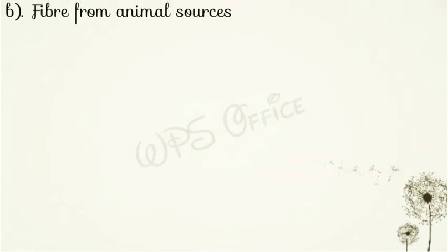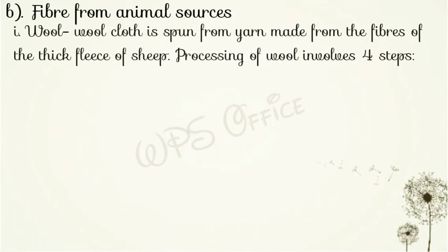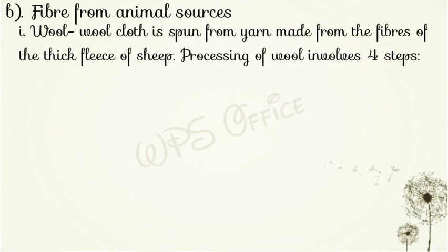The second point is fiber from animal sources — जानवरों के स्रोत से रेशा प्राप्त करना। They are of two types: wool and silk. Wool means ऊन. Wool cloth is spun from yarn made from the fiber of the thick fleece of sheep. ऊन के कपड़े जो होते हैं वो ऊन के रेशों से बनाई जाती है जो भेड़ के घने बालों को — जिसे fleece कहते हैं — से प्राप्त होती है। There are 4 steps involved in the processing of wool.